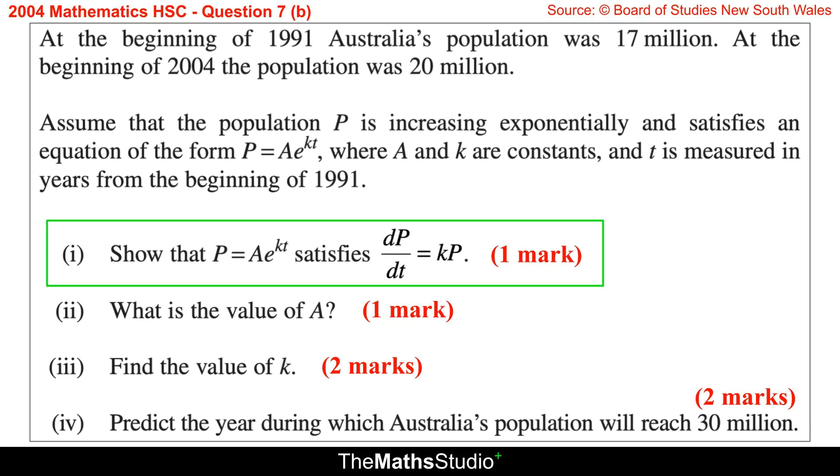Part 1. Show that P equals A times E to the power of KT satisfies dP dt equals KP.